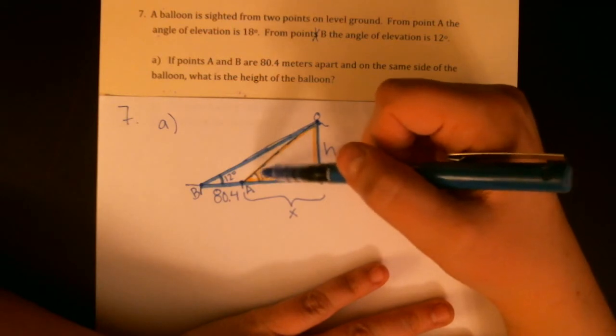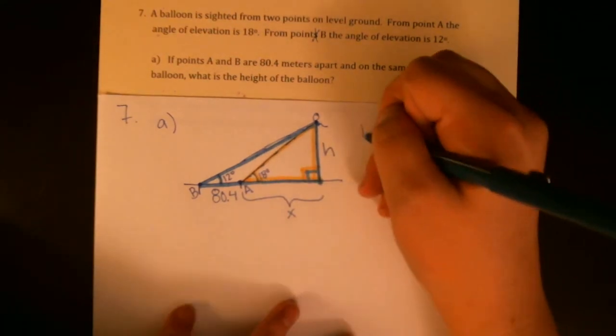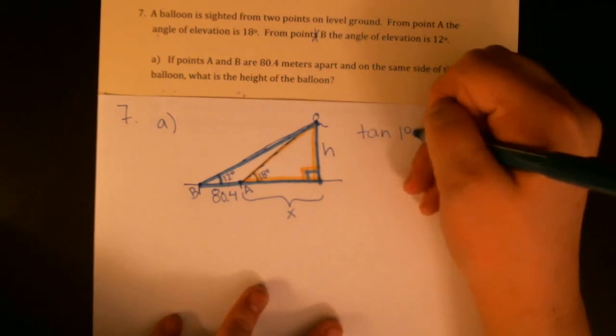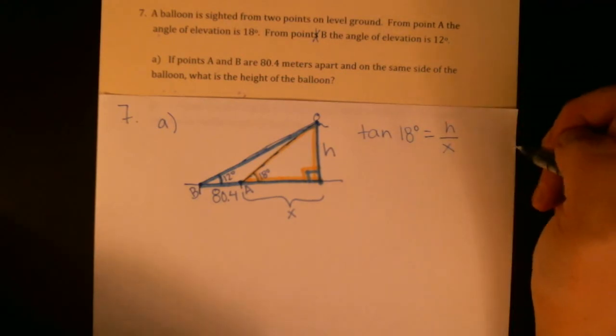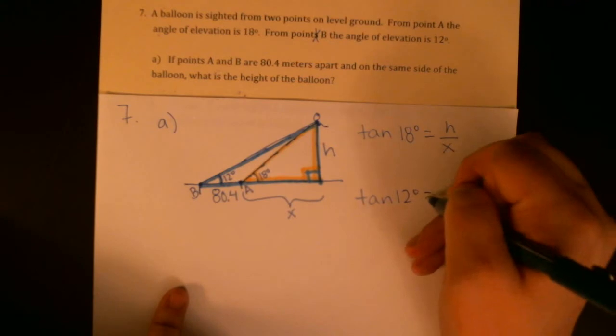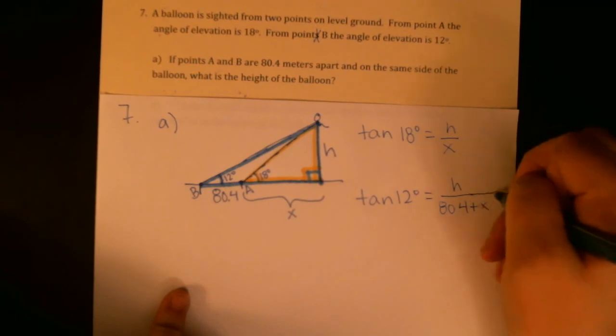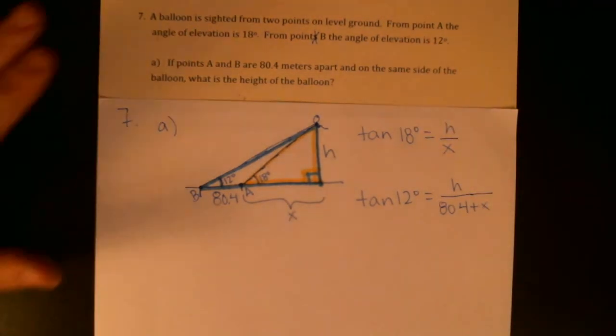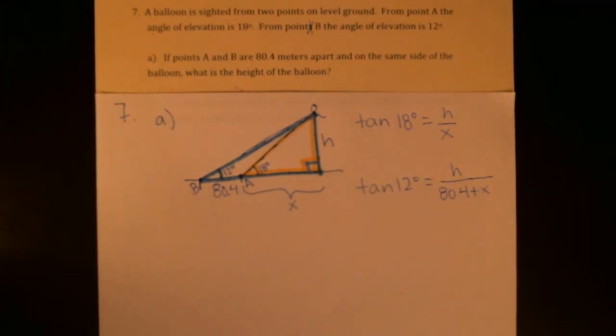So I'm just going to go about this as if I do know x. I'm going to say, let's start with the 18 because that's actually a little simpler: tangent of 18 degrees is equal to h over x. And I'm also going to say that tangent of 12 degrees is equal to h over 80.4 plus x. So what I've just done is built a system of equations—two equations and two variables—so I should be able to solve that.